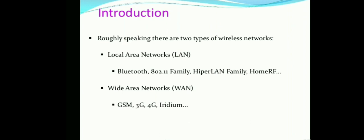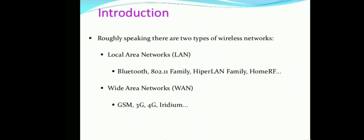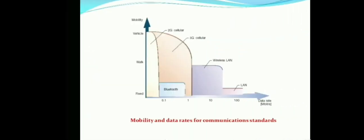HiperLAN is developed by ETSI — the European Telecommunication Standard Institute. Looking at mobility and data rates for communication standards: mobility increases for 2G and 3G communications as well as wireless LAN, but in terms of LAN, mobility is very low while the data rate is very high compared to 2G and 3G cellular techniques.